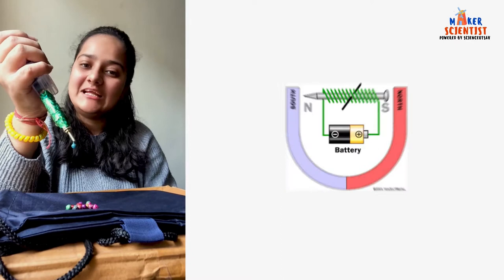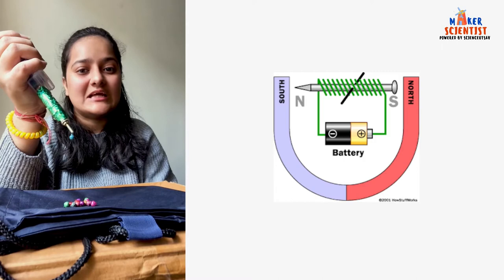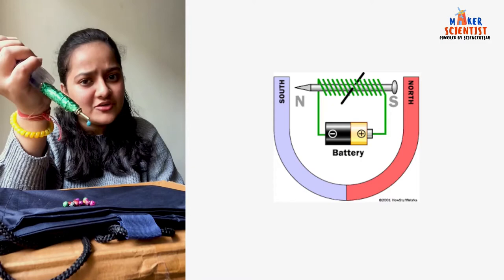As you can see, this electromagnet which we have created is pulling light metal objects using a screw. So, I'll tell you how we do it.